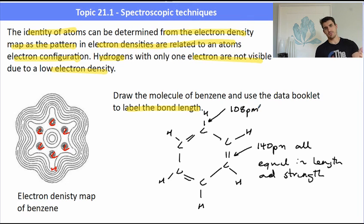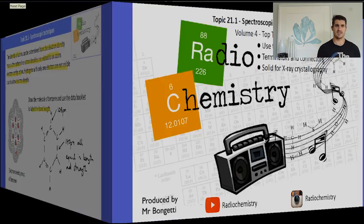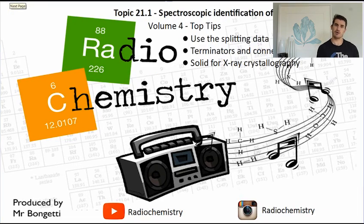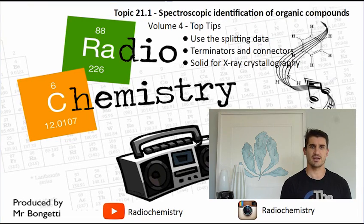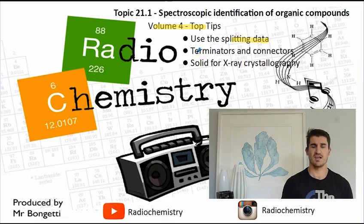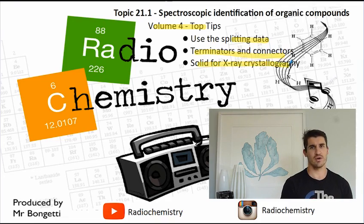Topic 21.1 top tips: use the splitting data to work out how many protons are on the neighbouring carbon, think about terminators and connectors, and solids must be used for X-ray crystallography. Thanks for watching — drop a like on the video, subscribe if you're new, and I'll see you next time.